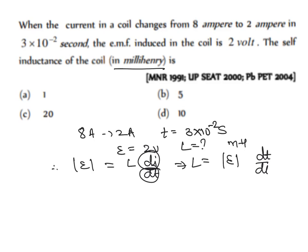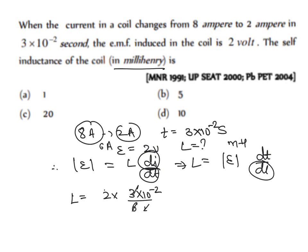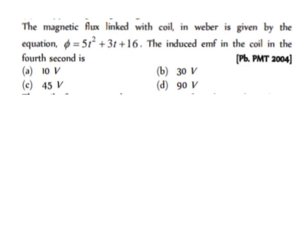Substituting values: L = 2 × (3 × 10⁻²) / 6 = 10⁻² henry = 10 millihenry. The change in current is from 8 to 2, which is 6 ampere. So L = 10 millihenry, and option D is the right answer.